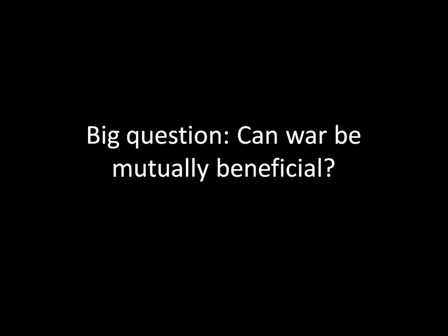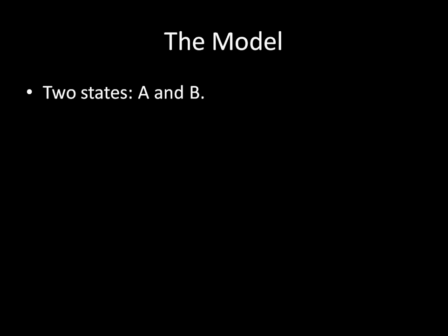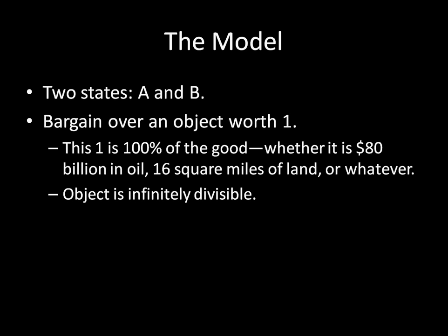So the model looks like this. There are going to be two states — we're just going to label them A and B. They're going to bargain over an object worth one. Now this one just means 100% of the good. In the last video, when it was Venezuela versus Colombia, that one represented 100% of $80 billion worth of oil, but it could also be 16 square miles of land or whatever. It's just 100% of the good.